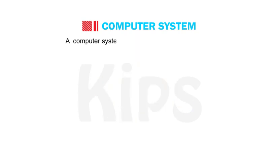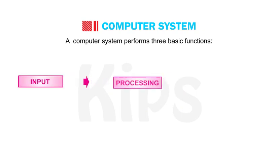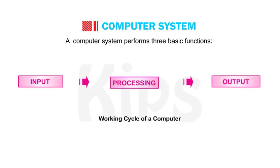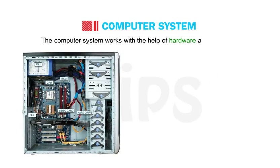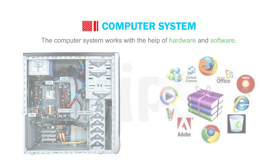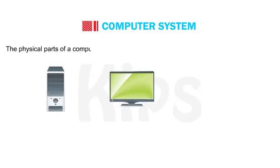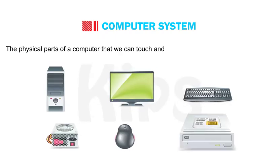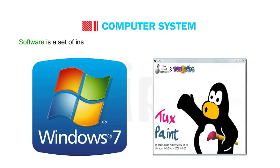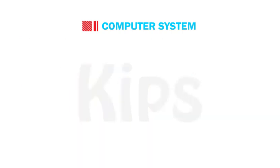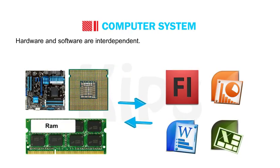A computer system performs three basic functions: input, processing and output. The computer system works with the help of hardware and software. The physical parts of a computer that we can touch and see are called computer hardware. Software is a set of instructions that helps the hardware to work in a desired manner. Hardware and software are interdependent.